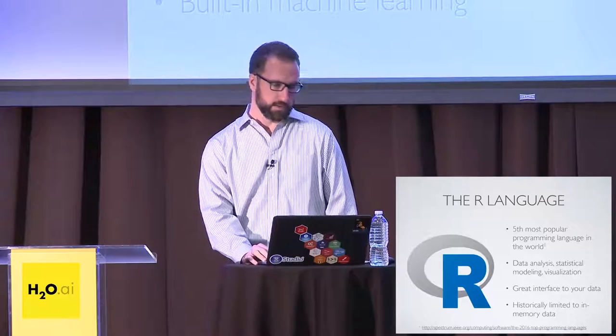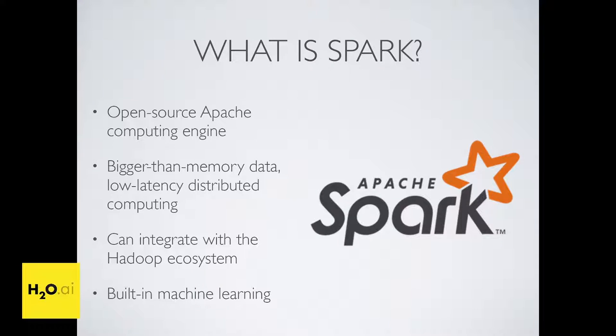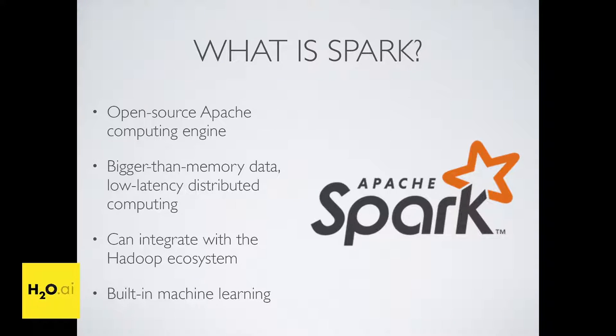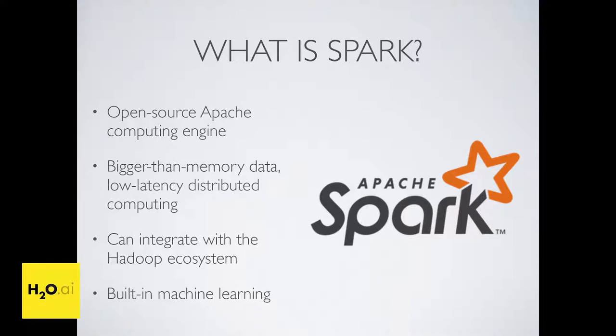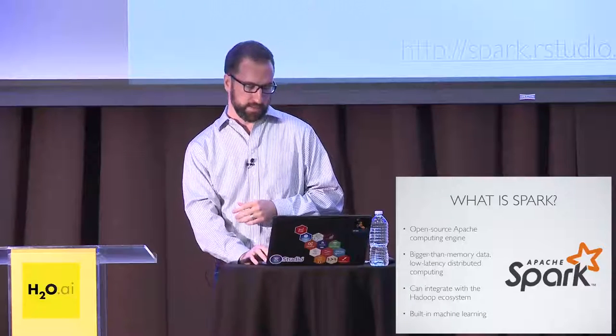What I want to talk about today is how we've overcome that memory limitation using Spark and some other tools. Spark is an open source computing platform that handles distributed data and distributed computation. You can handle bigger-than-memory data by distributing it across a large cluster with much more RAM. You can do low-latency, sub-second queries on massive datasets. It integrates well with the Hadoop ecosystem and has built-in machine learning, so you can leverage distributed ML frameworks when your data is in Spark.